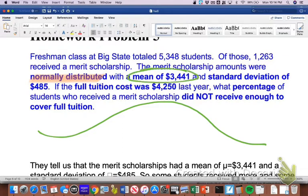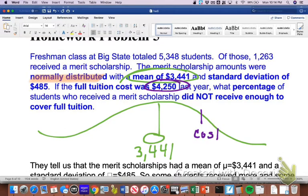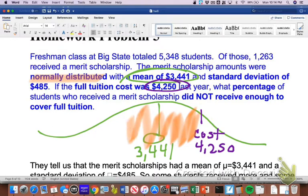The average mean scholarship that was given out right here in the middle is $3,441. So it's asking us if the full tuition cost was $4,250, the average scholarship is $3,441, but the actual cost that it actually takes to go there is $4,250, what percentage of students who received a merit scholarship did not receive enough to cover full tuition? So basically what we're looking for is the number of students who got scholarships that were below $4,250 because they didn't get enough to cover their tuition.